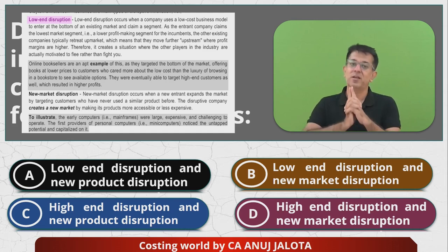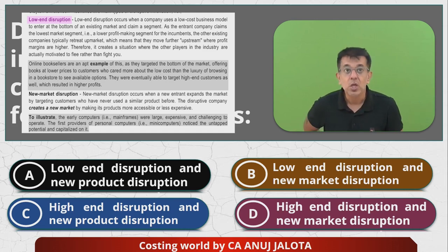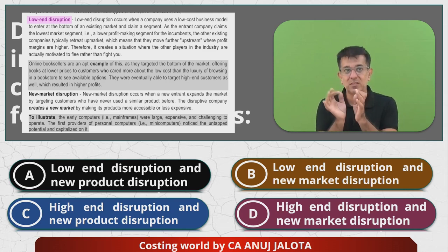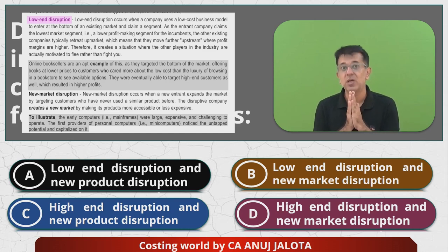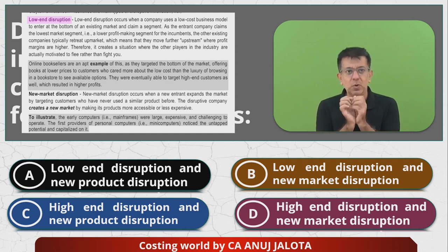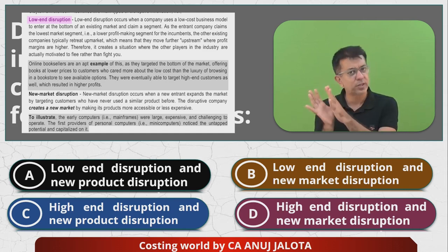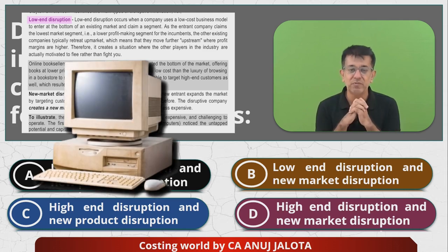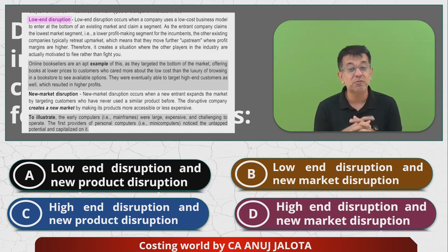There is another kind of disruption: new market disruption. What does the module say? New market disruption occurs when a new entrant expands the market by targeting customers who have never used a similar product before. The disruptive company creates a new market by making its products more accessible or less expensive. ICAI has given a beautiful example — computers.